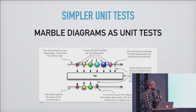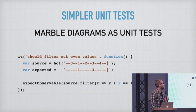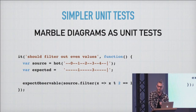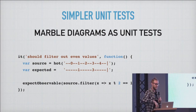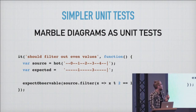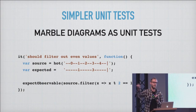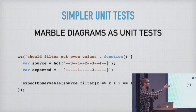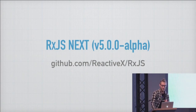Simple unit tests — marble diagrams. Andre Staltz had the best idea: why can't we just write our unit tests as marble diagrams? Because that makes a whole lot more sense than having an 18-line thing that checks numbers. This is what our unit tests look like right now: you tell it what your observable is, you tell it what you're expecting to get out at the end, and then you say expect observable filter to be this string. That's it — that's the crash course in the new Rx.